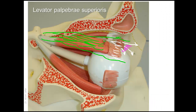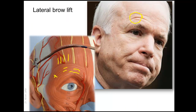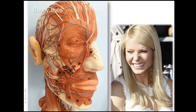If the injection is too close to the orbital margin, it might infiltrate inside the orbit and affect the lateral rectus muscle — an intraorbital muscle attached to the eyeball causing lateral deviation. Paralysis of this muscle results in a medial squint. It is always recommended that injections around the eye be about one centimeter away from the orbital margin to avoid infiltration of the upper eyelid, which could cause paralysis of levator palpebrae superioris and result in ptosis.